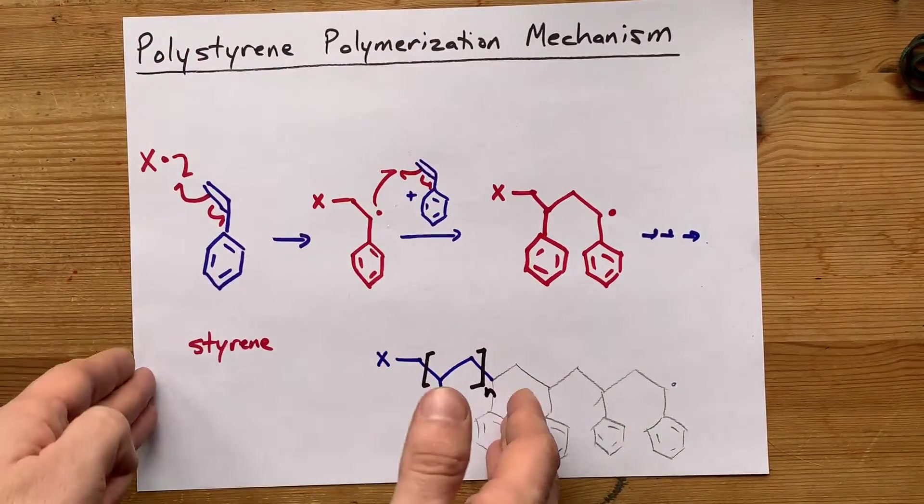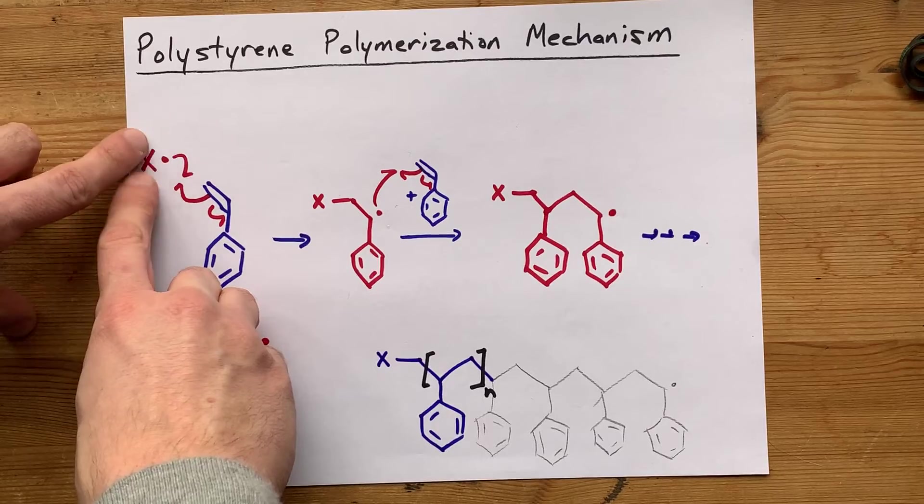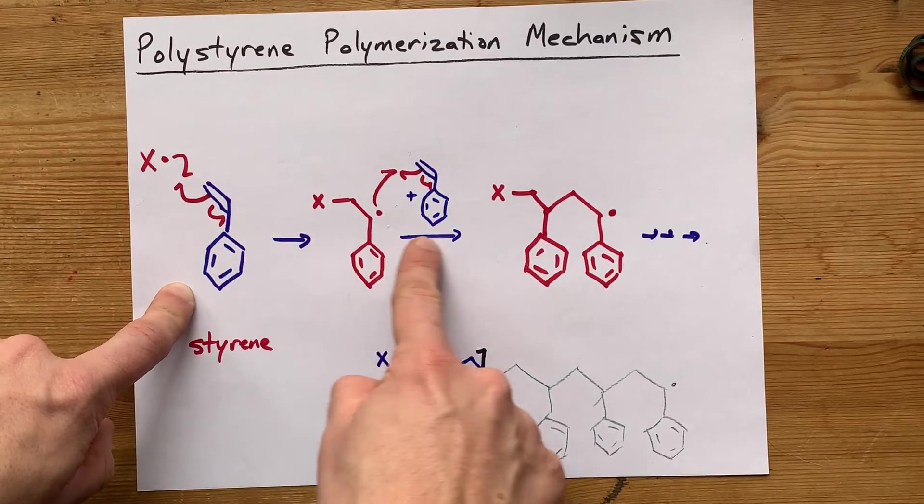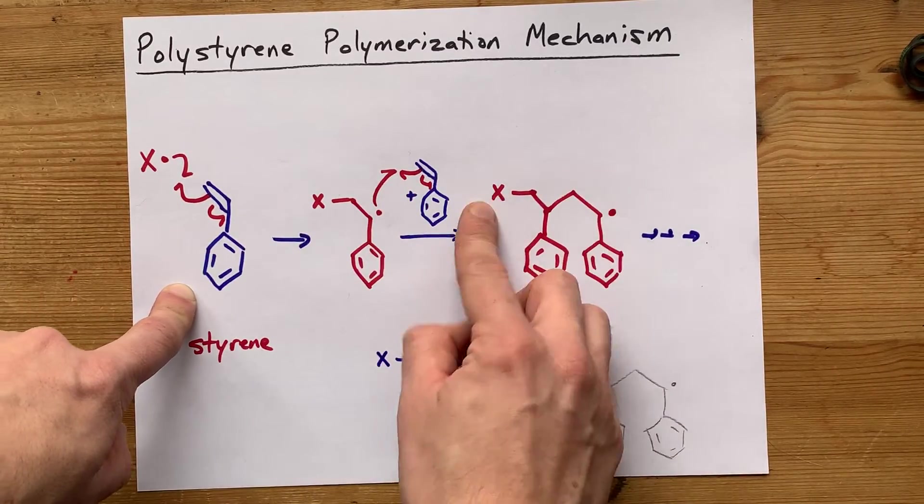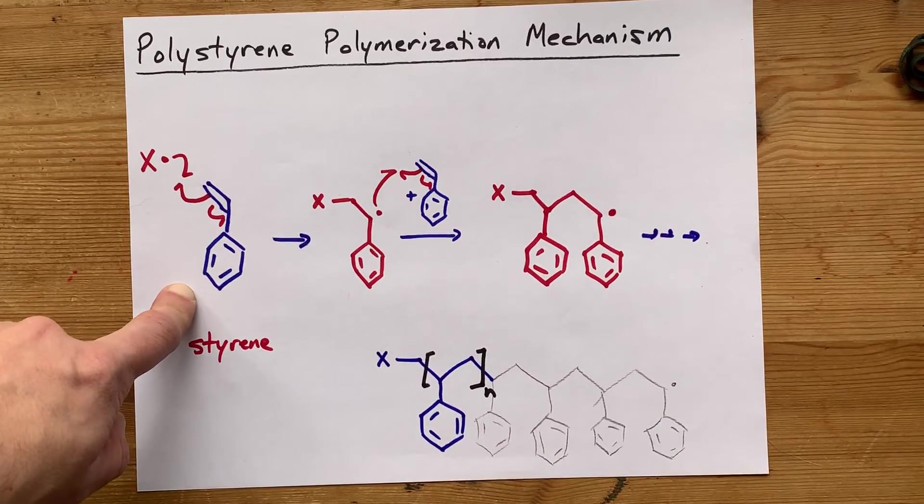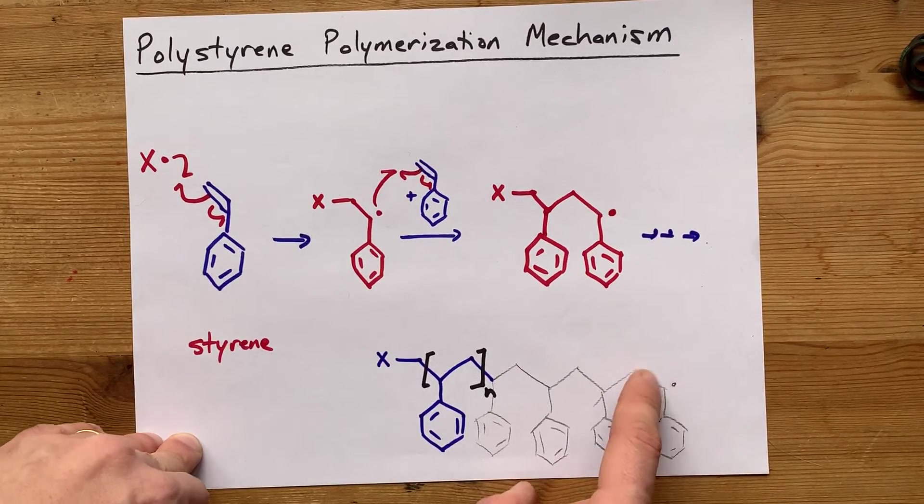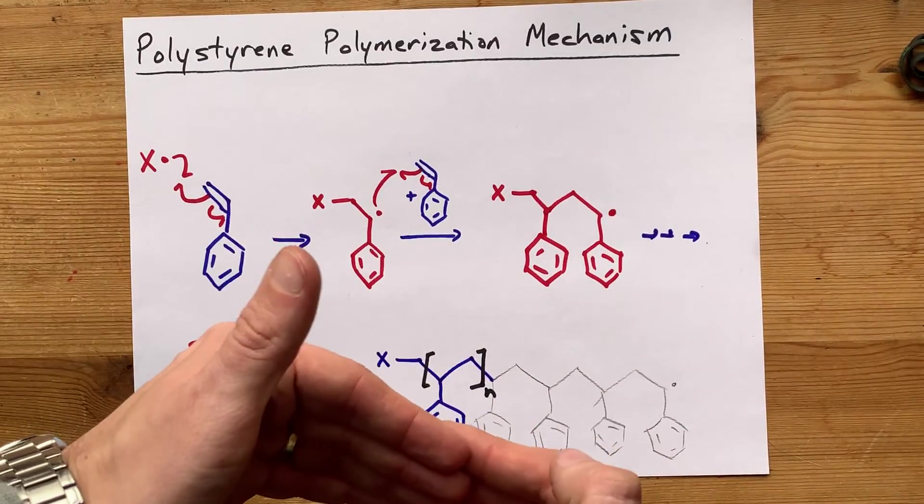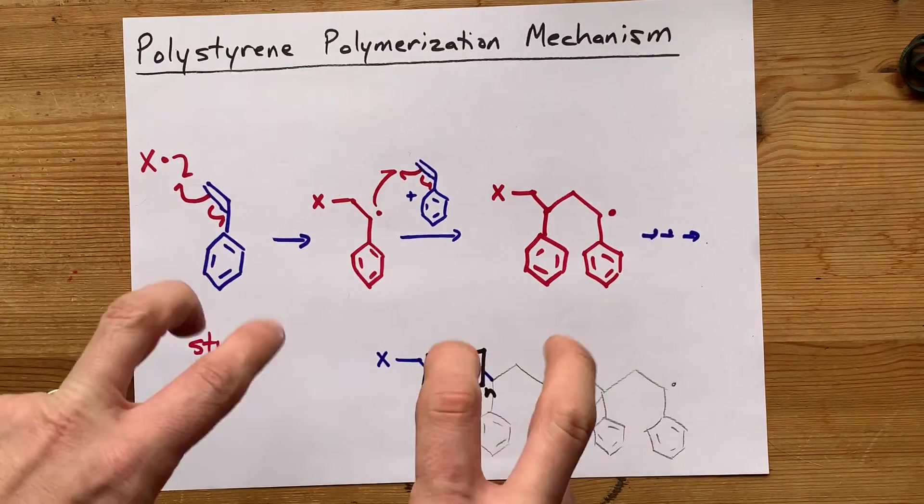So the addition polymerization is the initiation to create this. The propagation, where you add styrene, styrene, styrene, styrene. And then, to get rid of these, two free radicals come together, and that's called termination.